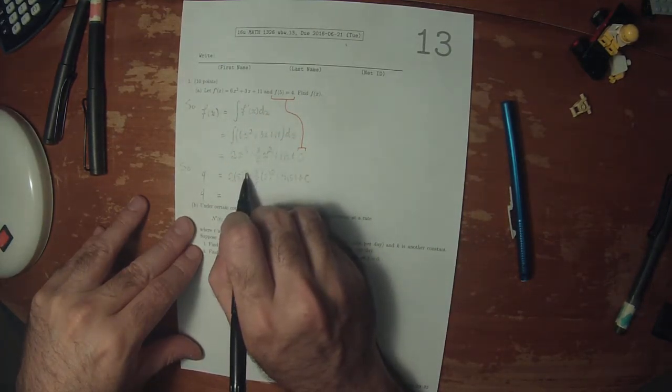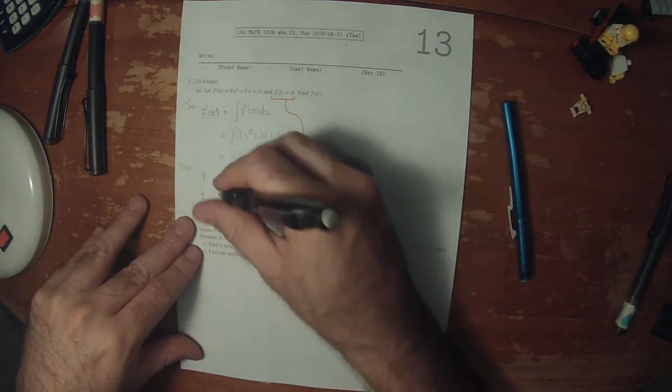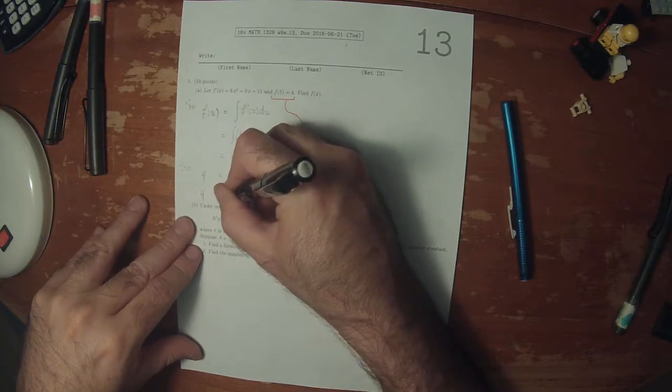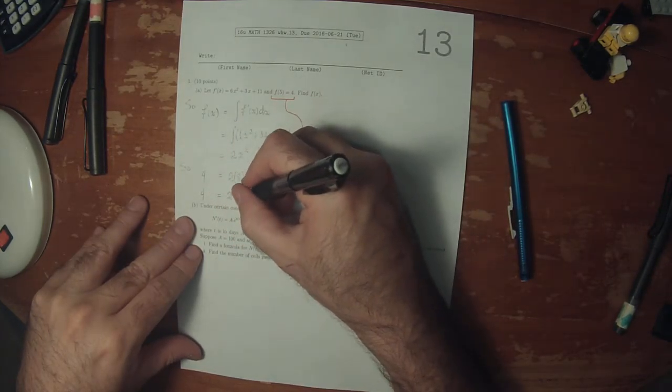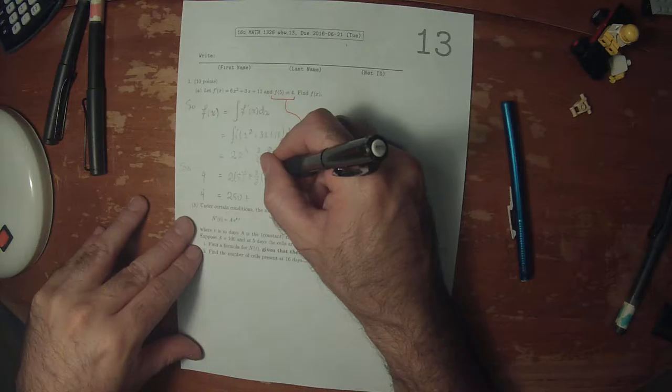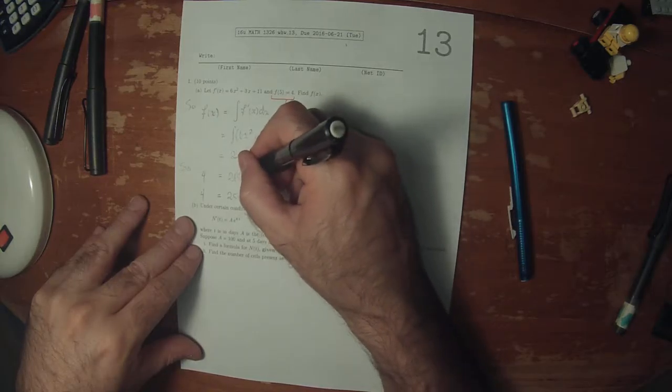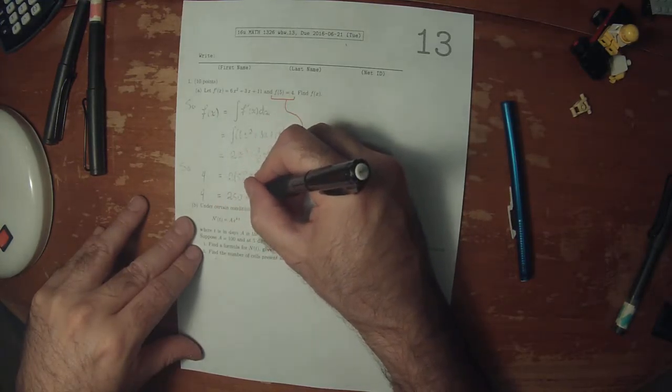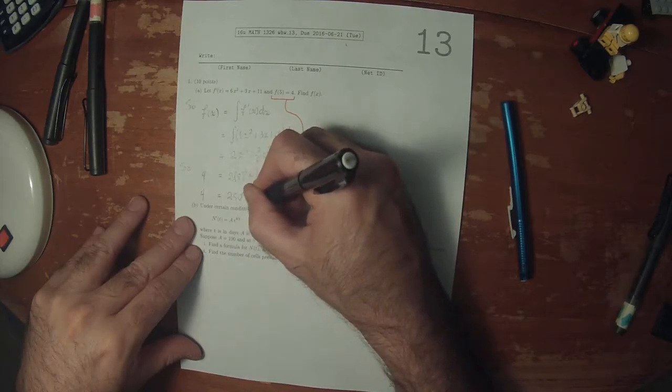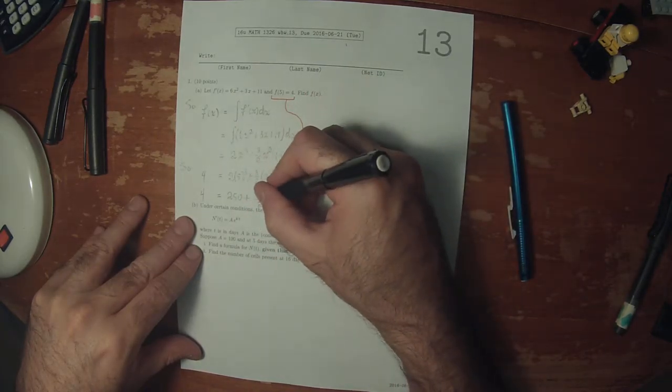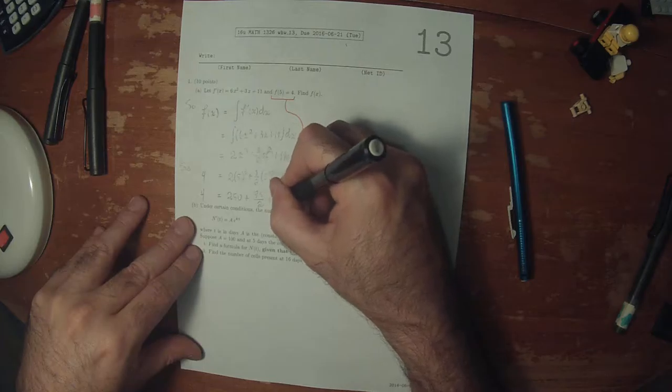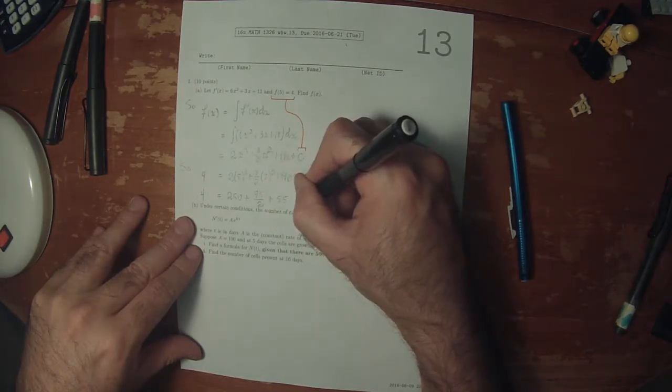So 5 cubed, that's 125 times 2 is 250, plus 5 squared is 25 times 3 is 75 over 2, plus 55 plus C.